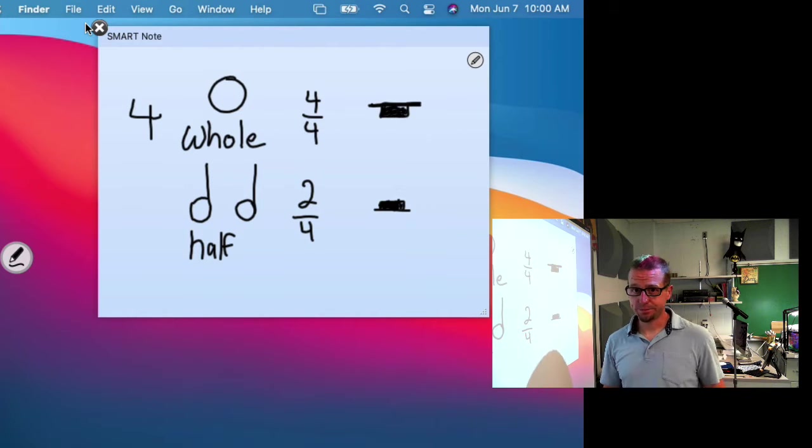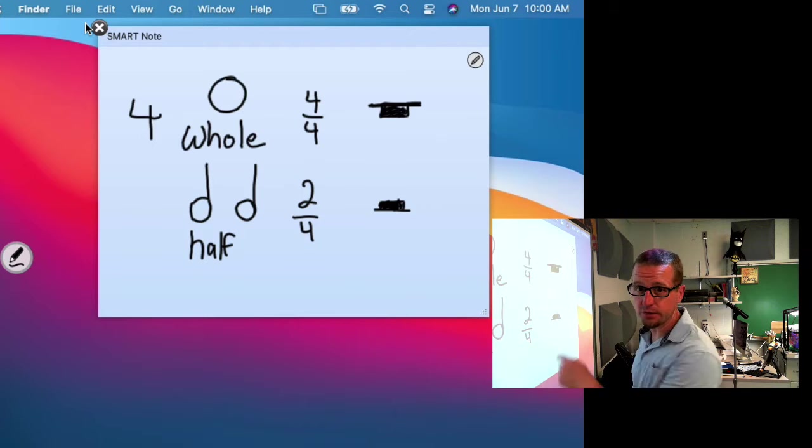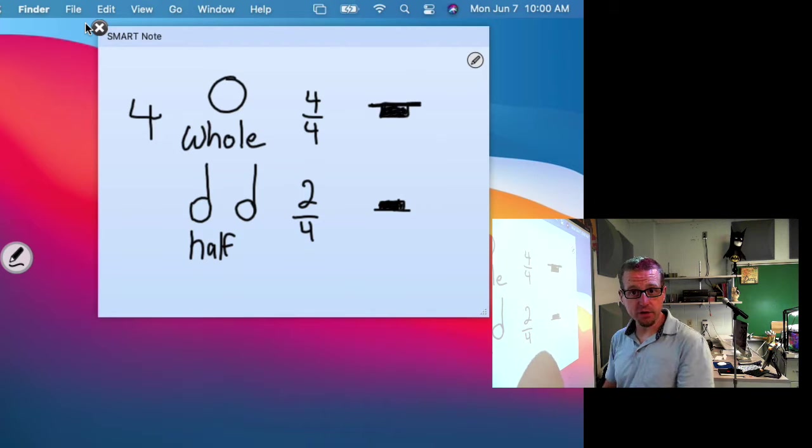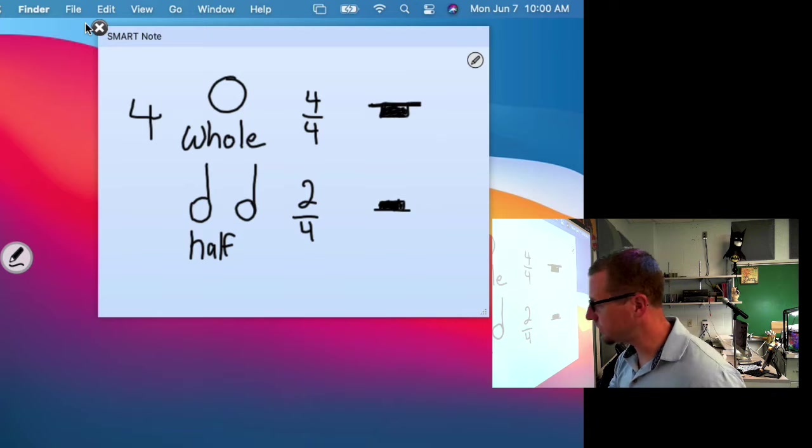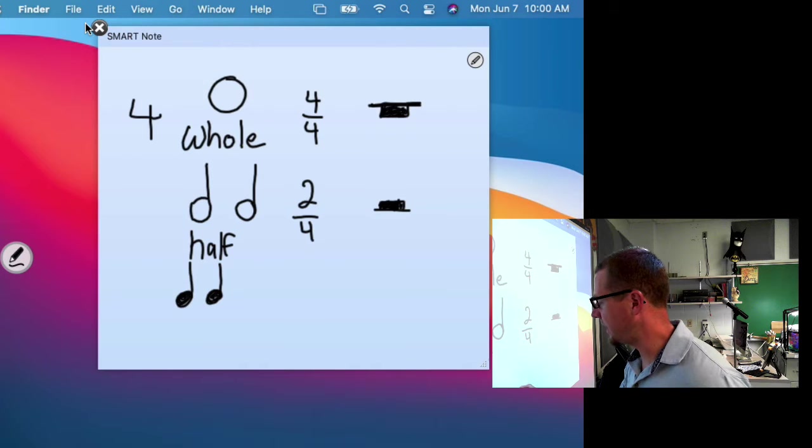Now, quarter note. Each half note, which is worth 2, so when you add them up together they equal to 4, right? Each half note can be split as well into quarter notes. Now these are the same words you use in math class: whole, half, quarter. And they mean the same thing, out of 4.